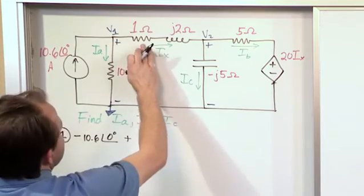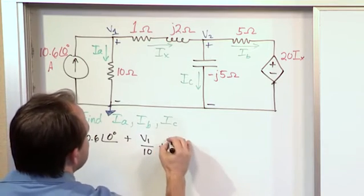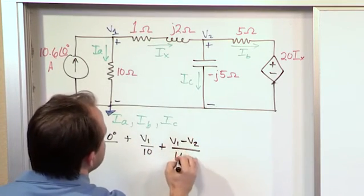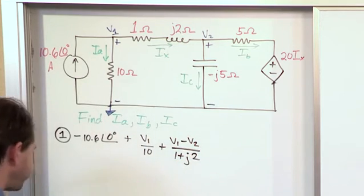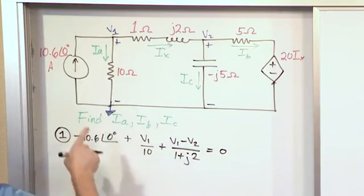And then we also have this current here. Now, I know it's labeled I sub X, but don't worry so much about that. The current here is going to be V1 minus V2 over this impedance 1 plus J2. And then this is going to be equal to 0 because it's essentially Kirchhoff's law right here at this node.